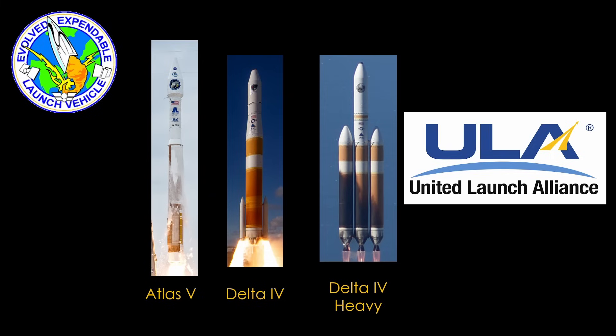This situation led to ULA getting about 140 million for either an Atlas 5 or Delta 4 launch, and 430 million for a Delta 4 Heavy. It was very profitable for ULA, and SpaceX wanted in on some of that business.